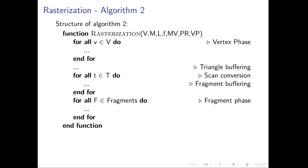We can see that algorithm 2 has the same asymptotic runtime upper bounds as algorithm 1. The loop over all fragments is now bounded by the number of input vertices times screen resolution times number of light sources (assumed constant). So the runtime complexity stays the same. However, because we buffer all triangles and fragments, memory consumption goes way up.